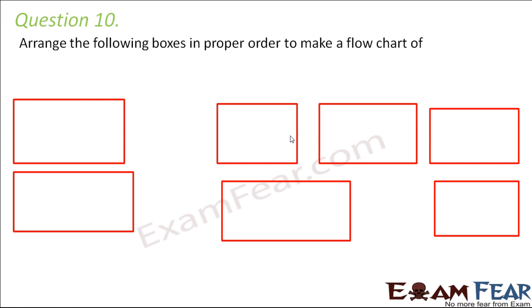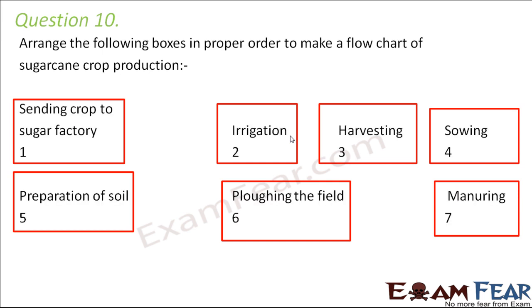Question number ten: arrange the following boxes in proper order to make a flow chart of sugarcane crop production. We have to arrange them in a particular sequence. The first step is soil preparation. Once the soil is prepared, plowing takes place. After plowing, we provide manures to the field.